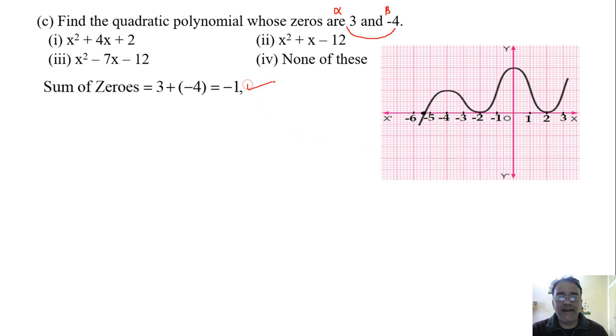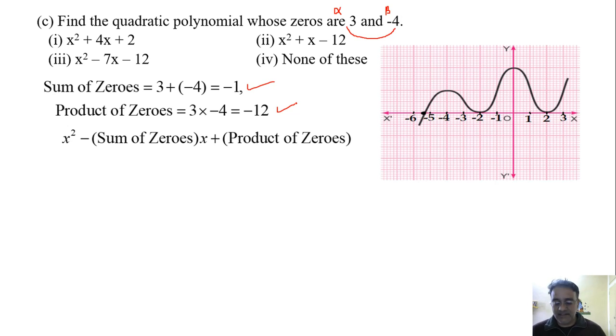So sum of zeros is minus 1 and product is minus 12. Now we have the formula: x square minus sum of zeros times x plus product of zeros. We'll substitute the values. What's the final answer? x square plus x minus 12. Very good. Which option is correct? Second option.